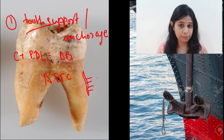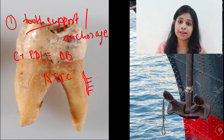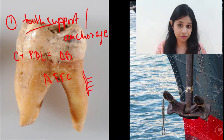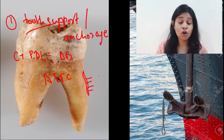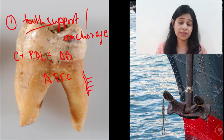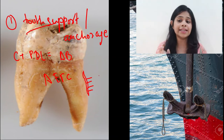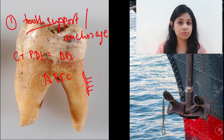We have spoken about the Sharpey's fibers in the video where we discussed the periodontal ligament fibers. These fibers belong to the extrinsic group of the cementum and help in the attachment of the cementum to the alveolar bone.